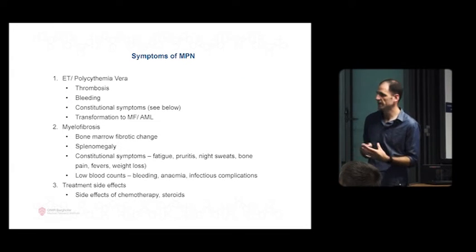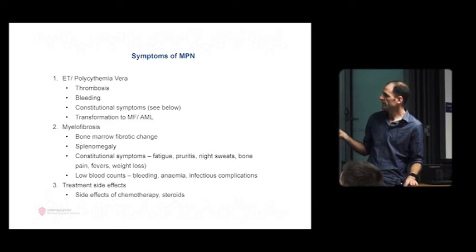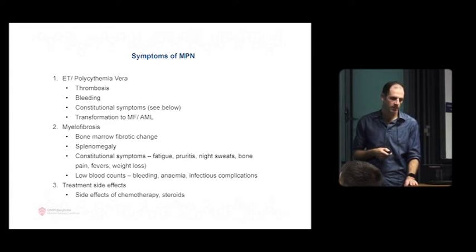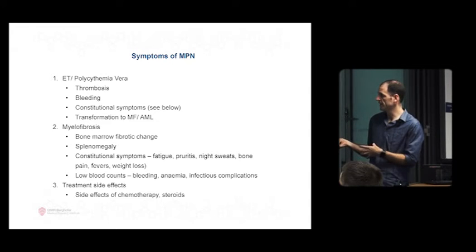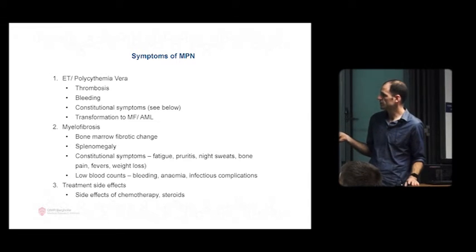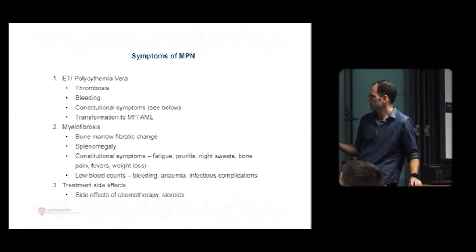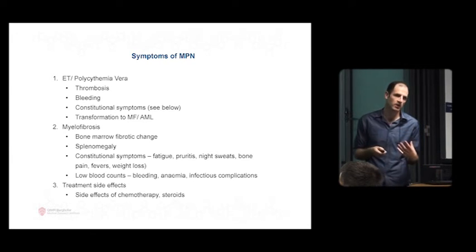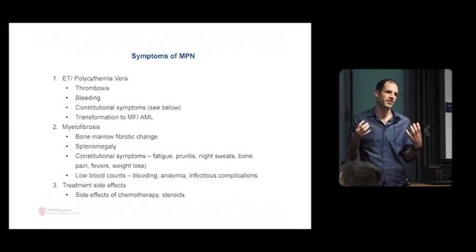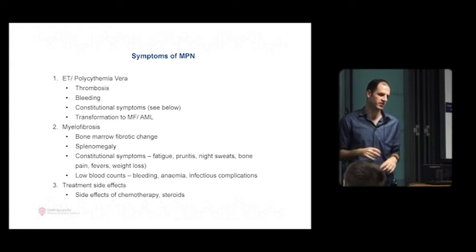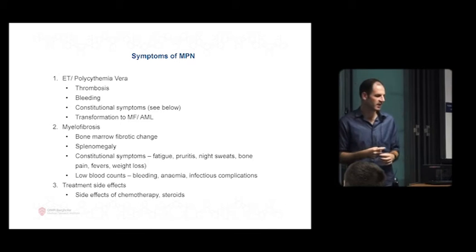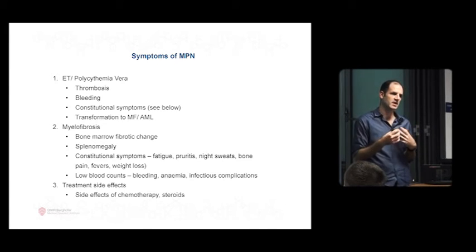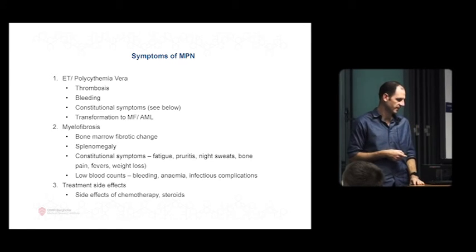I'll talk about the other myeloproliferative neoplasms now. ET and polycythemia are characterized by an increased risk of clotting or bleeding. A lot of constitutional symptoms - and by constitutional symptoms, we mean things like fatigue, pruritus (itch), night sweats, bone pain, fevers, weight loss. So a lot of these general symptoms that people think, 'I'm going crazy, what's this? I'm itching all the time. Every time I get out of the shower, I'm itching.' These are all caused by abnormal cytokines, abnormal inflammation in the body.